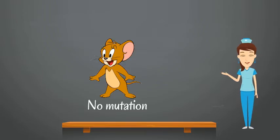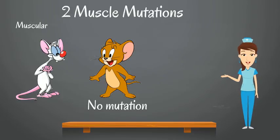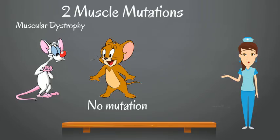However, if a mutation does occur, it can happen in two ways. The first is muscular dystrophy. This is when the muscles do not grow with you and you have too few muscle cells.